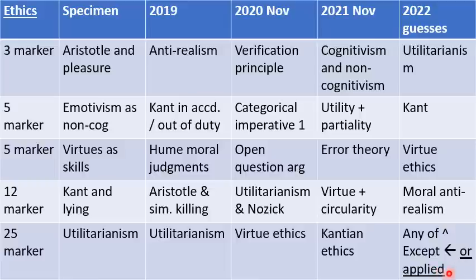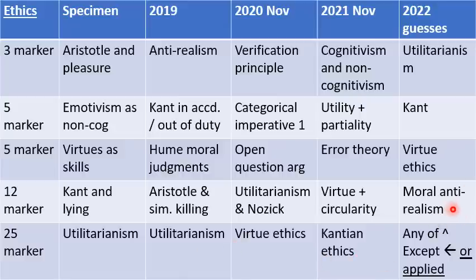This sort of shows how you need to know all of the specification anyway. The 25-marker could technically be on any of the normative theories because they're all in the advanced information. However, I wonder if it will be about moral anti-realism — a meta-ethics 25 marker — because the normative theories have all come up in previous years. I would be gambling on meta-ethics. I would probably have essays up my sleeve both for meta-ethics and for the normative theories.